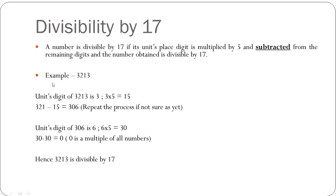Let's look at the example 3213. The units digit is 3. You multiply that by 5 and get 15. Now subtract 15 from the remaining digits, 321, and you get 306. If you aren't sure whether 306 is divisible by 17, repeat the process. The units digit of 306 is 6; multiply by 5 to get 30. Subtract 30 from the remaining digits, which is also 30, and you get 0. Since 0 is a multiple of all numbers, 3213 is divisible by 17.